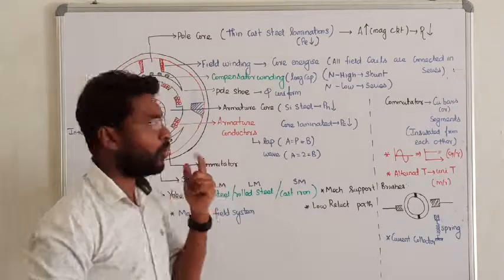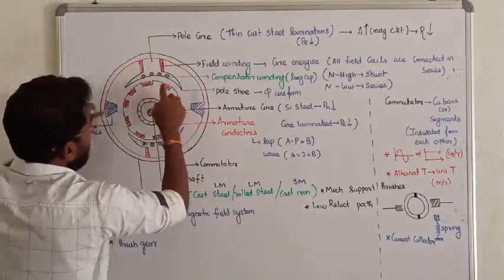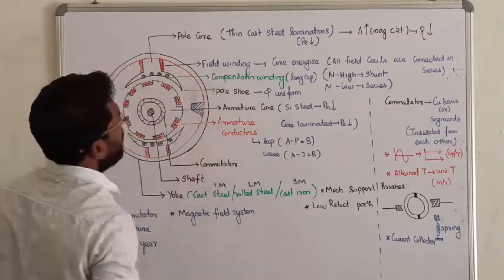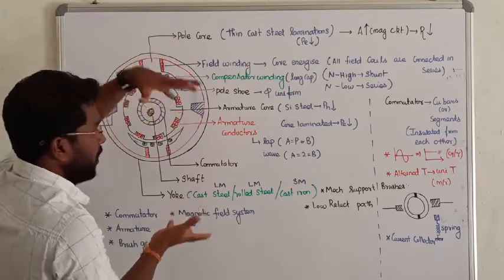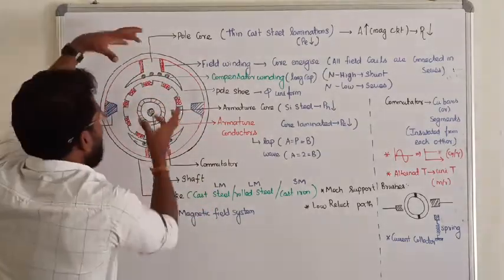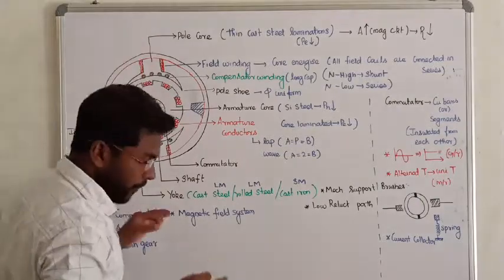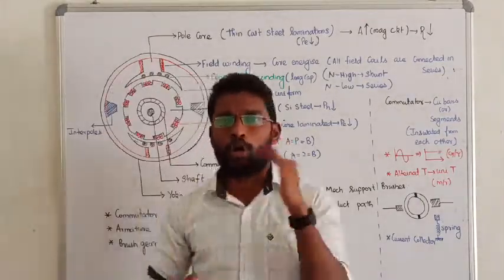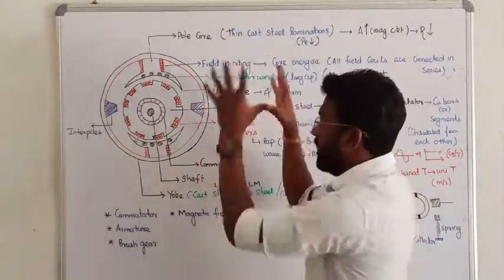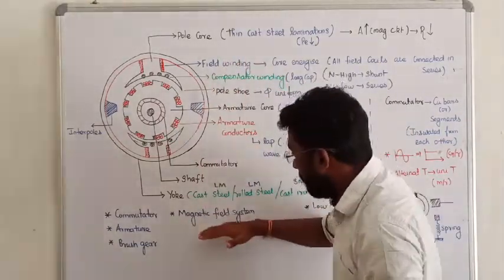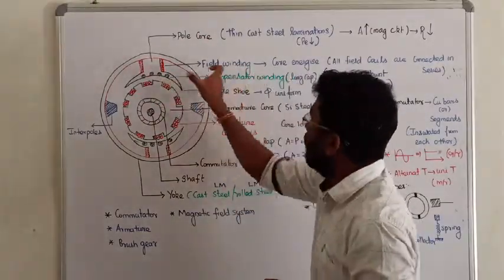The main pole has two parts. One is called the pole core and the other is called the pole shoe. The pole core is where we place the magnetic field system — the field winding is wound around the pole core. The field winding will produce the main field flux. The pole core is made of cast steel.